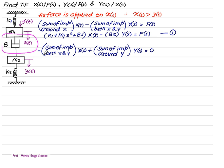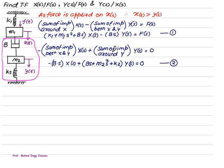For the second equation, we write minus the sum of impedances between x and y — which is bs — multiplied by x(s), plus the sum of impedances around y multiplied by y(s), equals zero, since no force acts on y(t). The first term between x and y is again bs. For the sum of impedances around y: y is connected to m2, which is connected by b and k2, so we consider all elements about m2. The impedance of m2 is m2s², impedance of b is bs, and k2 is k2, all multiplied by y(s). This gives us equations 1 and 2.